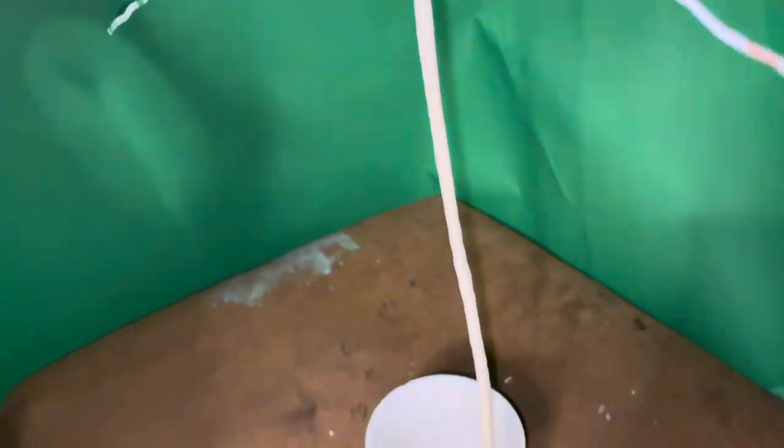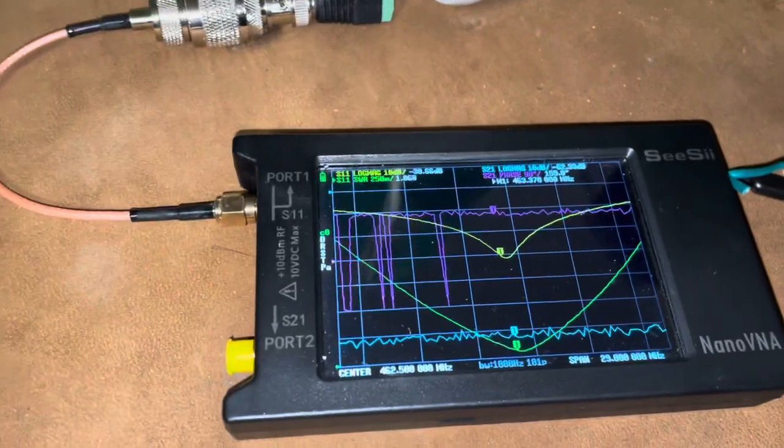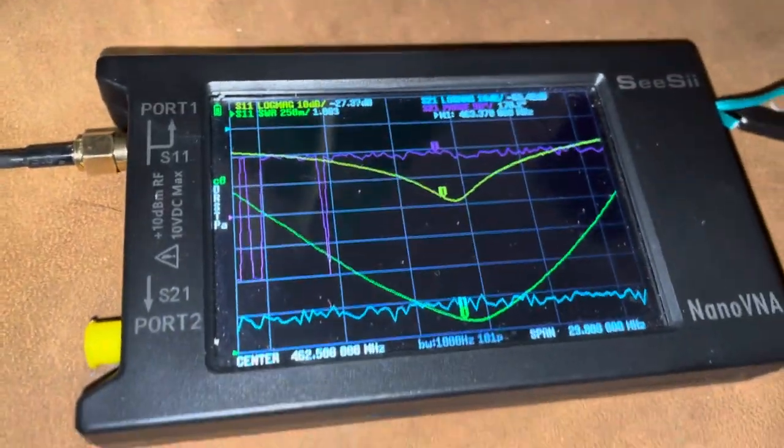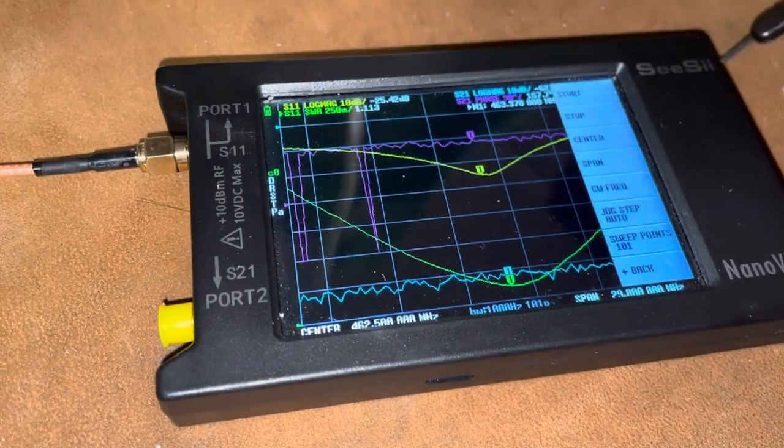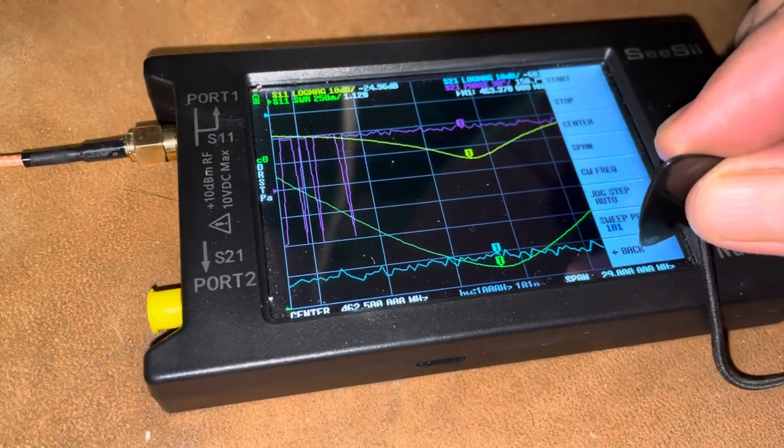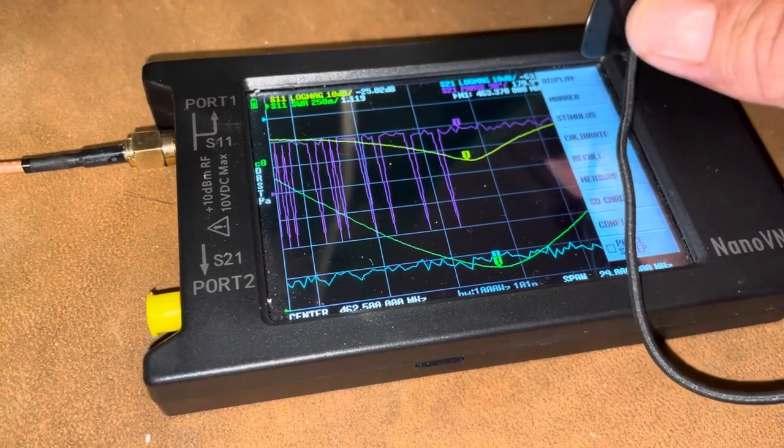And what about the arms? Let's check out the arms. How many arms does this balanced line have?